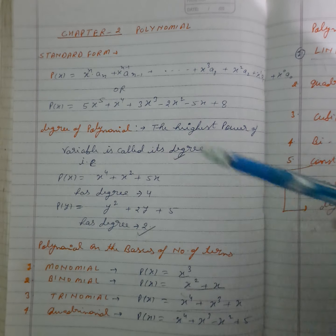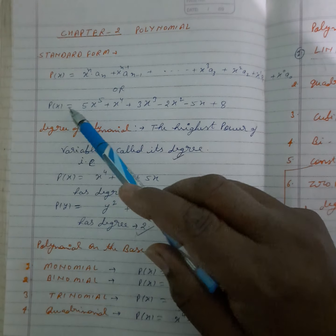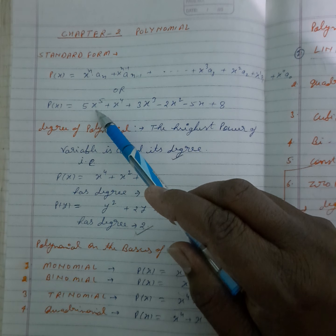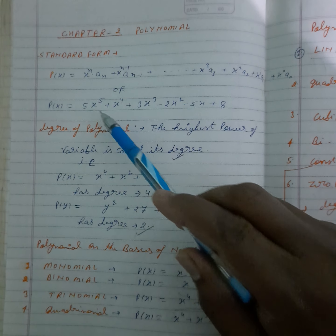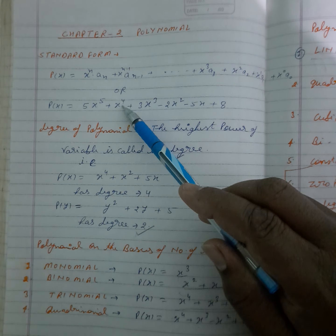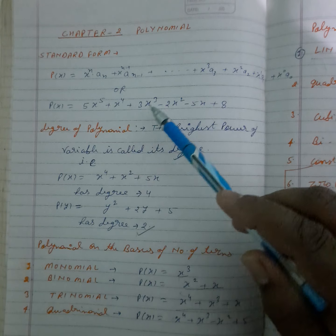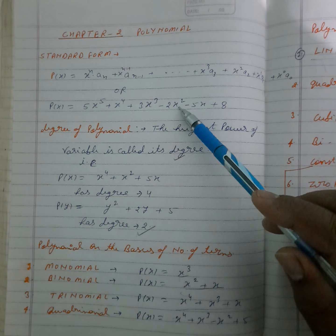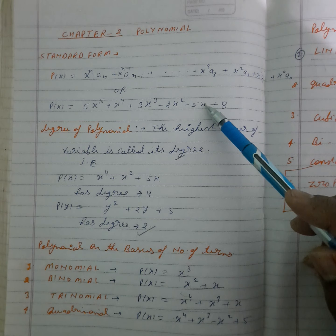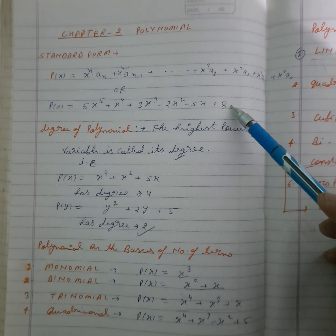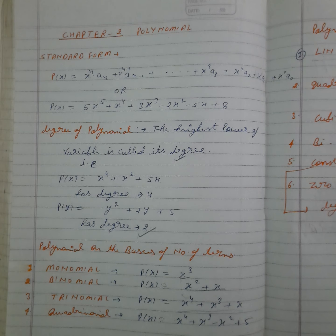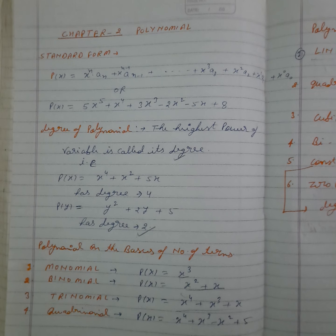Or simply you can write down that p(x) equal to 5x to the power 5, then x to the power 4, after that x to the power 3, then x squared, then x to the power 1, and then without x. So in this way we can write down the polynomial in standard form.